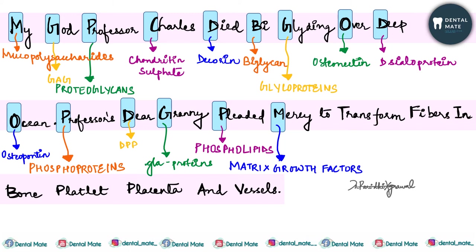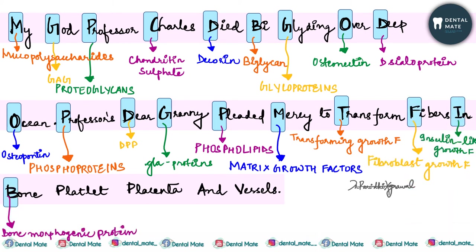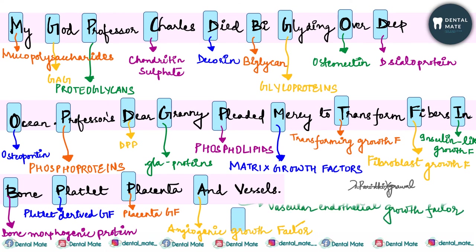The other component of ground substance is matrix growth factors. These include transforming growth factor, fibroblast growth factor, insulin-like growth factor, bone morphogenic protein, platelet-derived growth factor, placenta growth factor, angiogenic growth factor, and vascular endothelial growth factor.